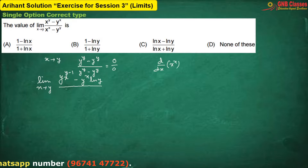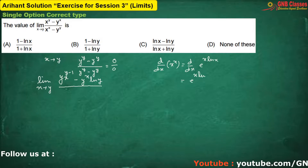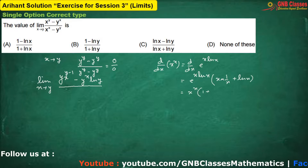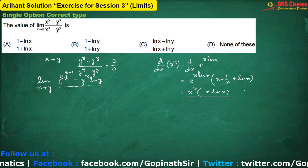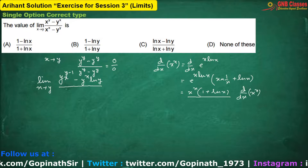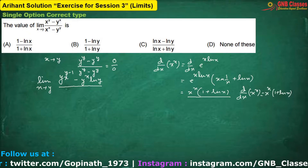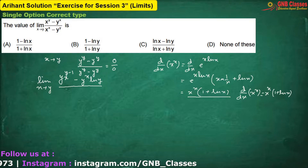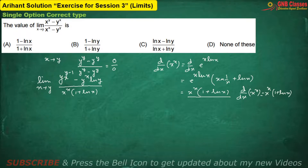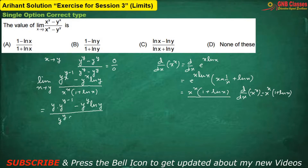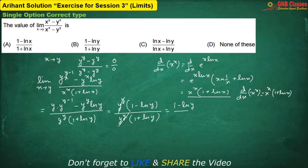d/dx of x to the power x can be written as d/dx of e to the power x·ln(x). So if we differentiate, it is basically 1 plus ln(x). Please remember this as a formula: d/dx of x to the power x is always equals to x to the power x times (1 plus ln x). So in the denominator we are getting that, and as y is constant, y to the power y is also constant, so it will become zero. Now if we put the limit, we are left with (1 minus ln y) by (1 plus ln y). Hence option B is correct.